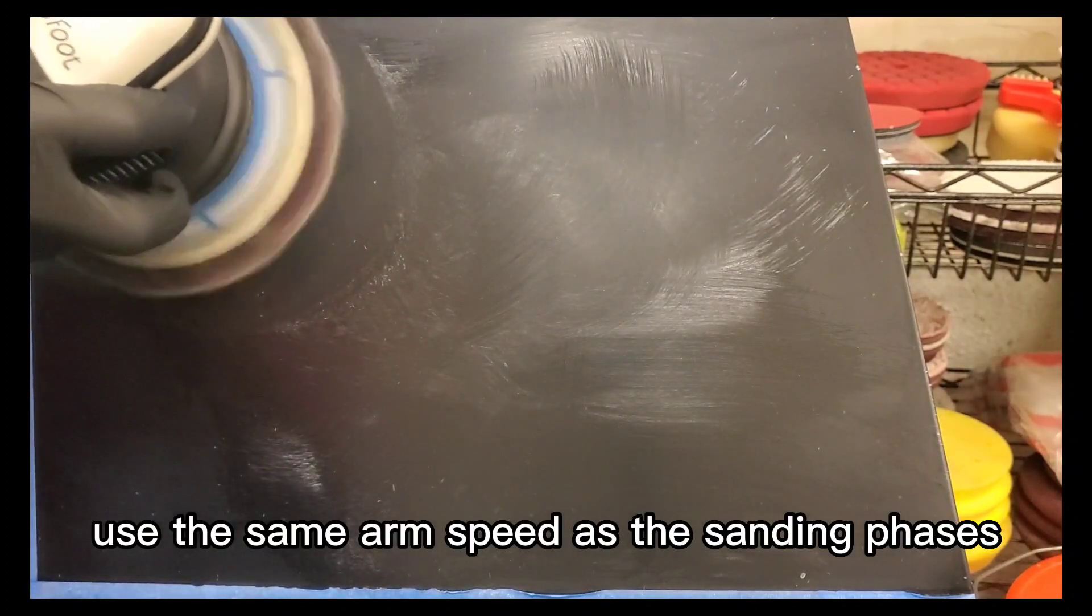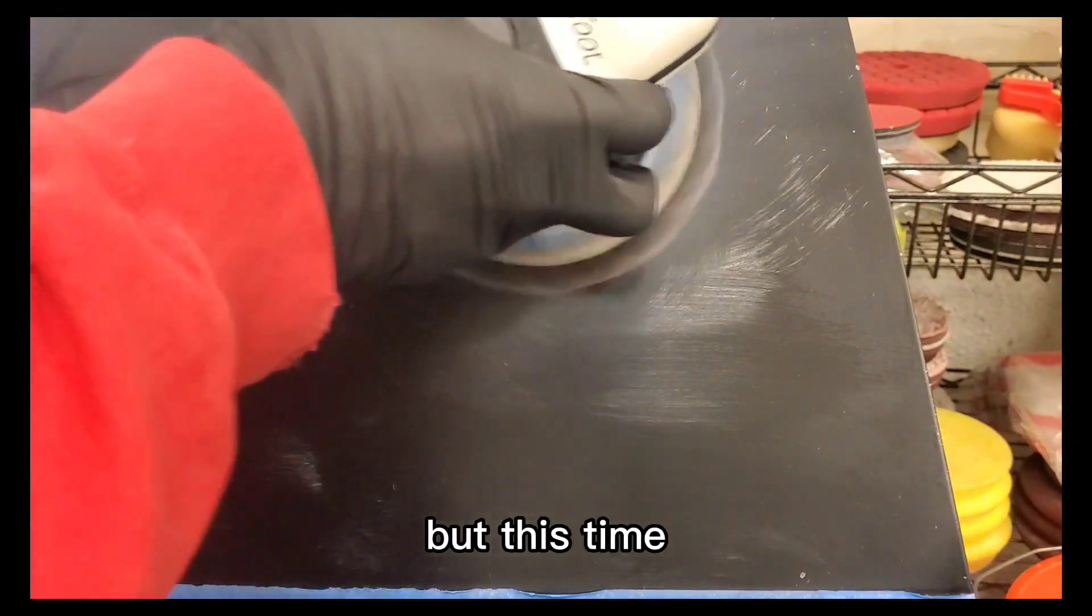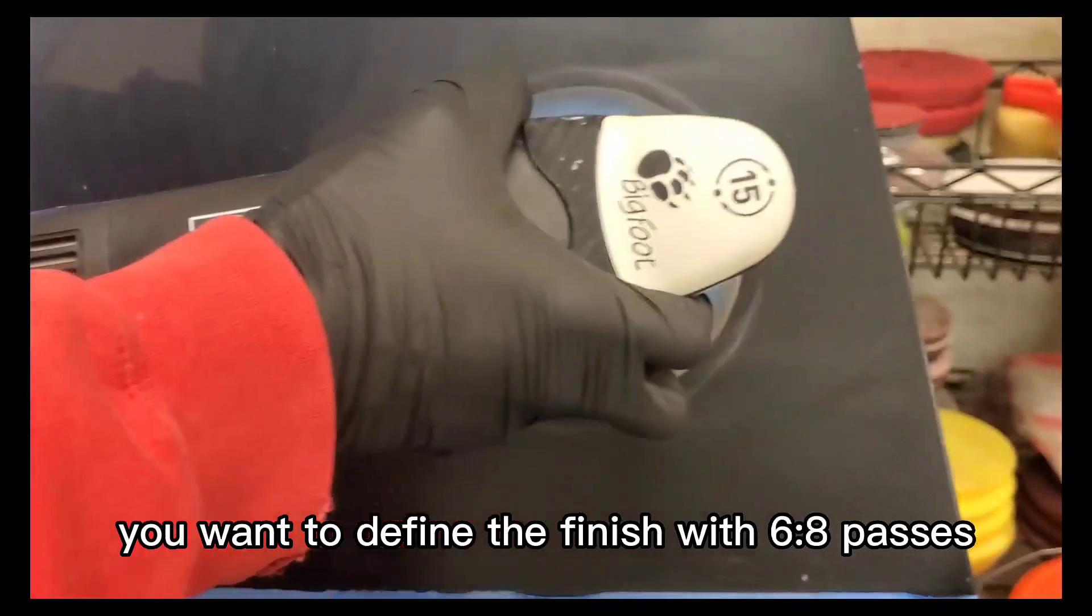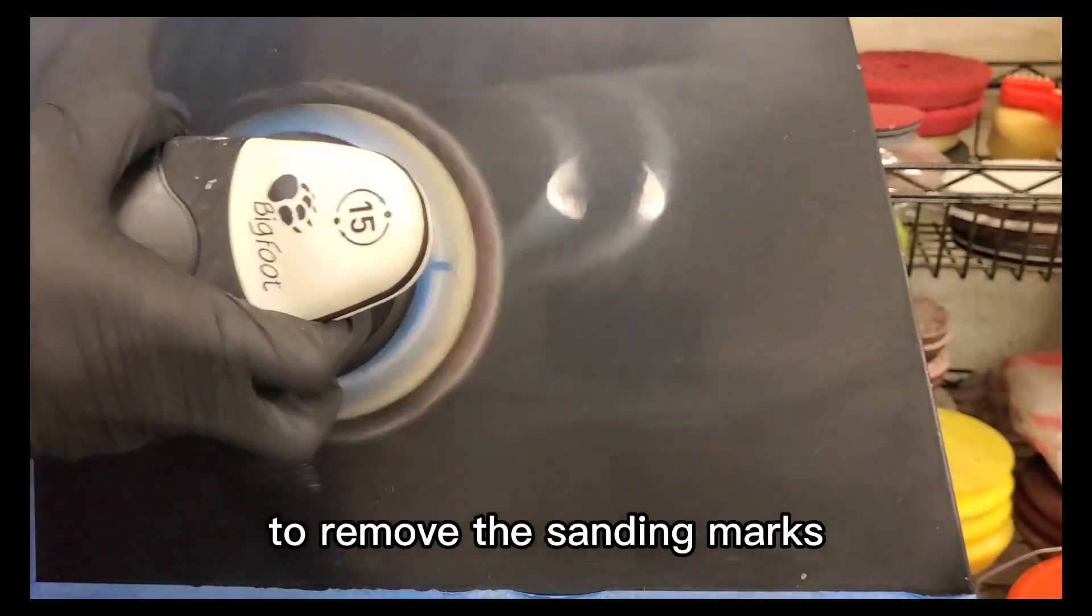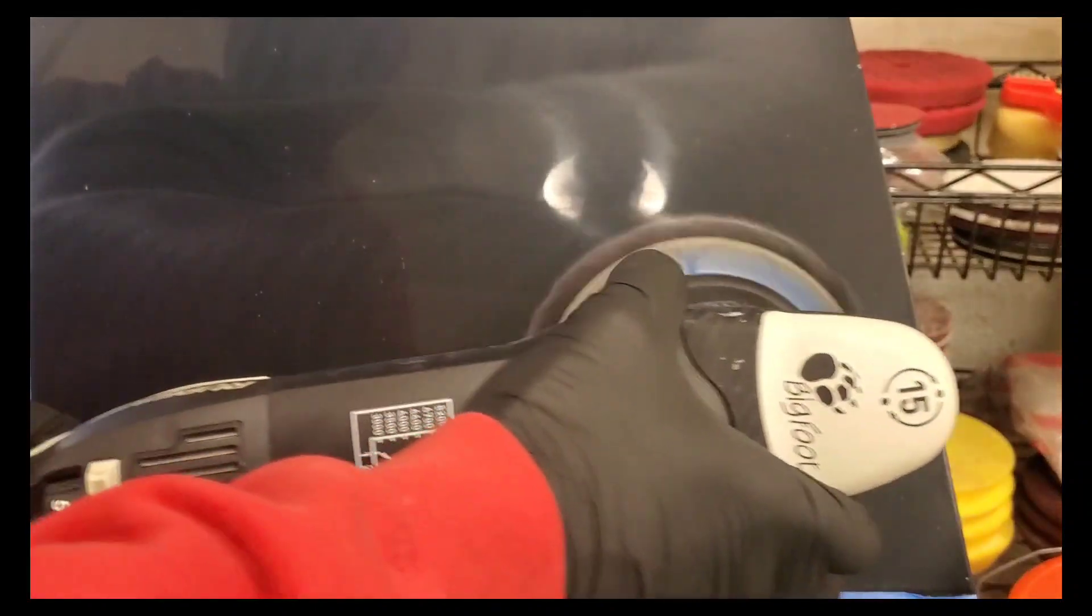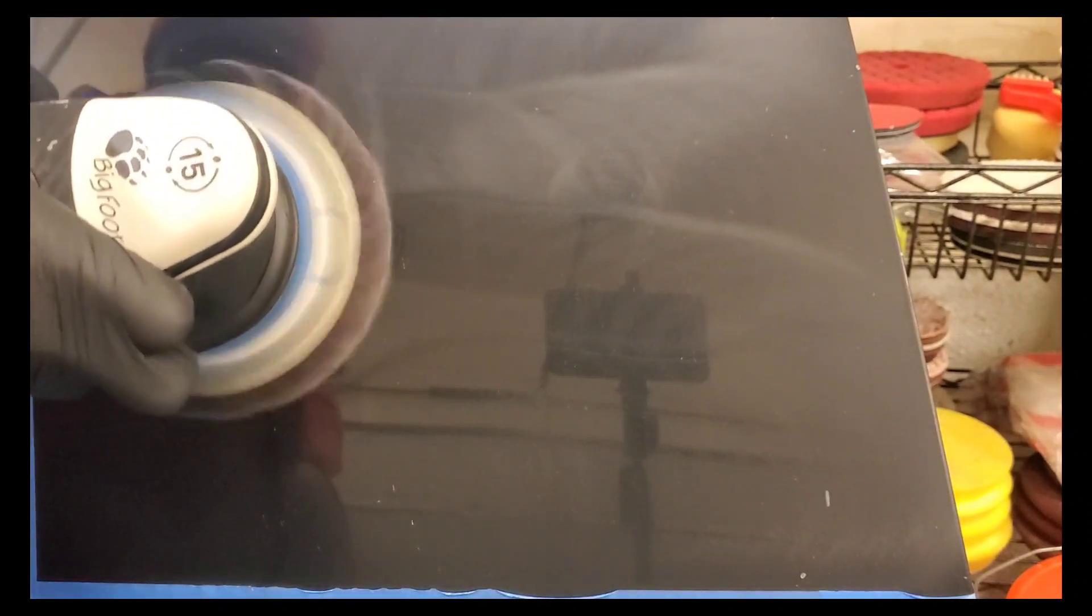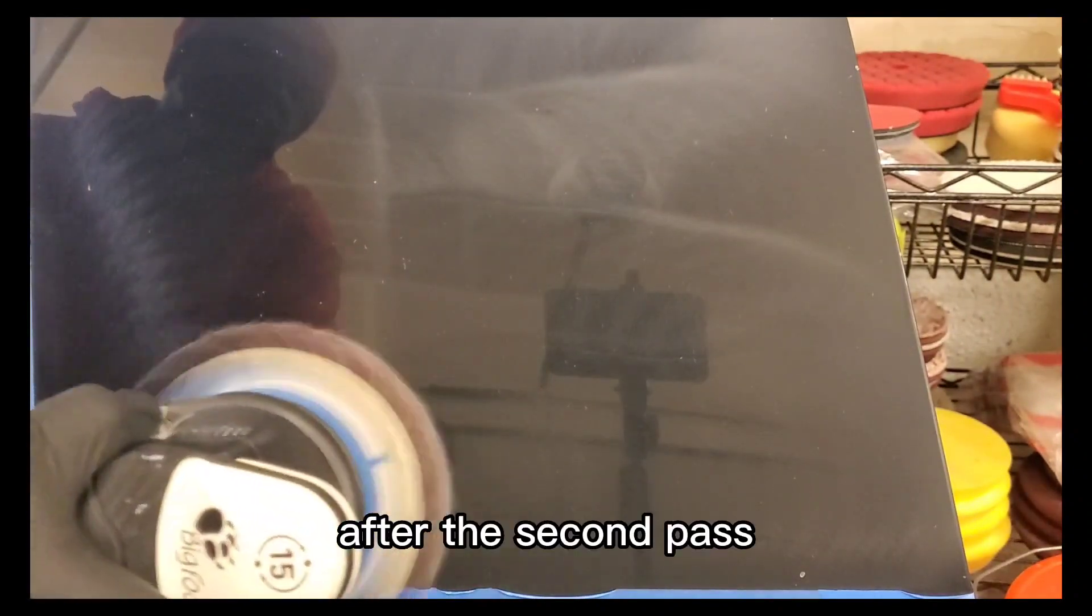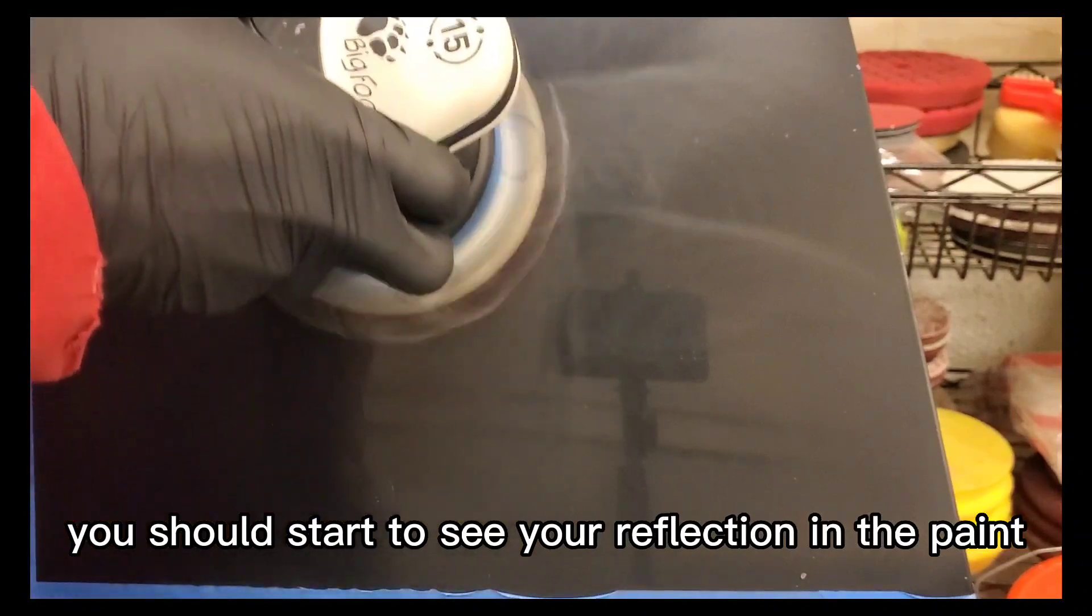Use the same arm speed as the sanding phases but this time you want to refine the finish with six to eight passes to remove the sanding marks and bring out the luster in the paint. After the second pass you should start to see your reflection in the paint.